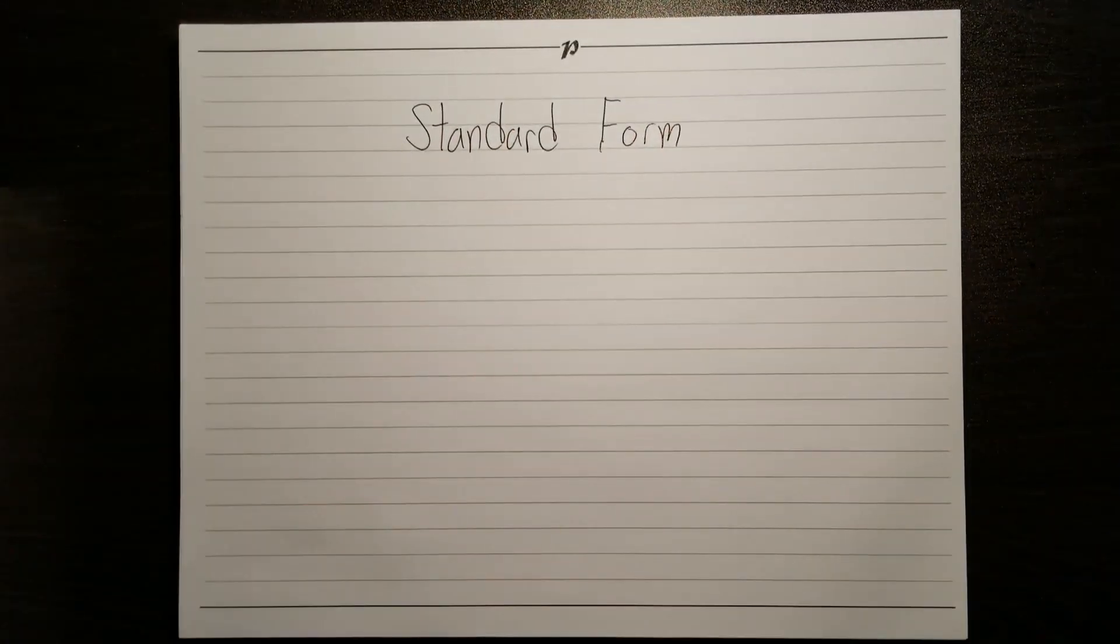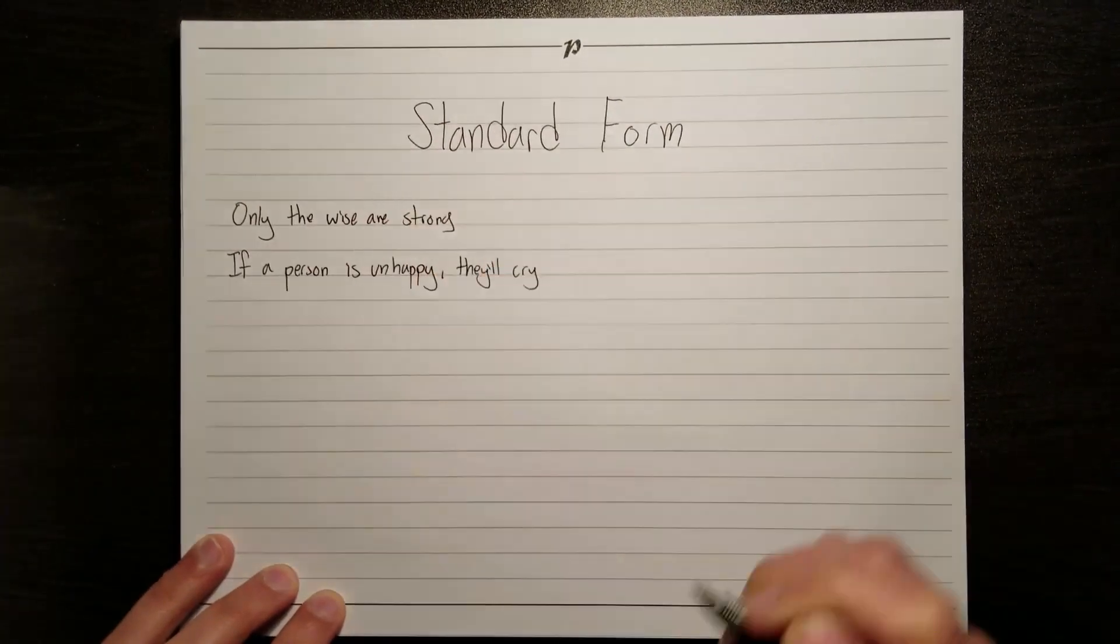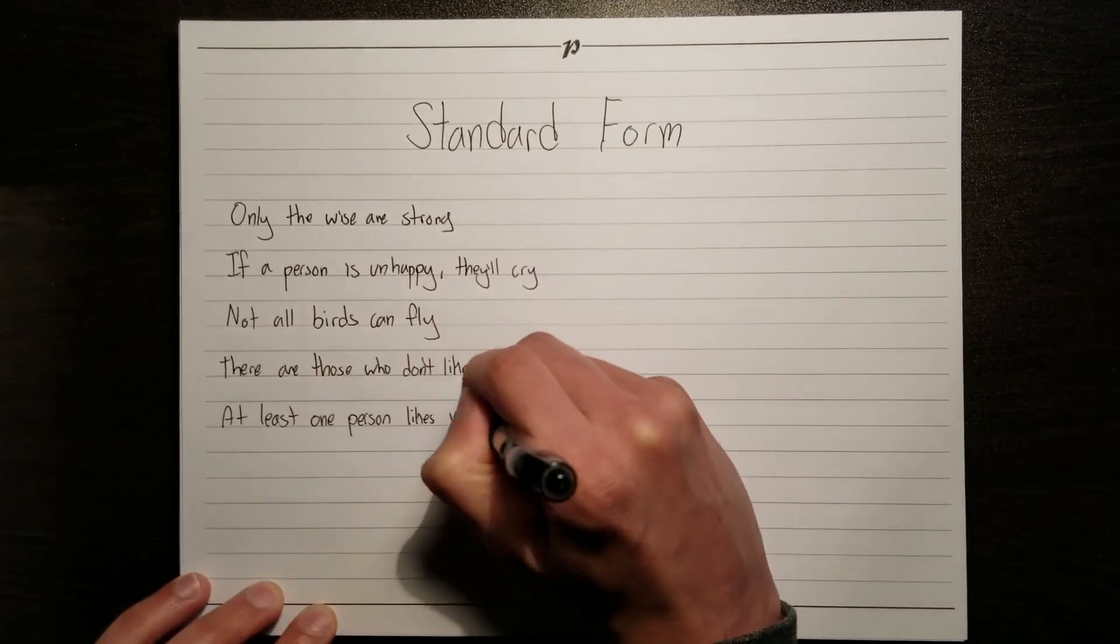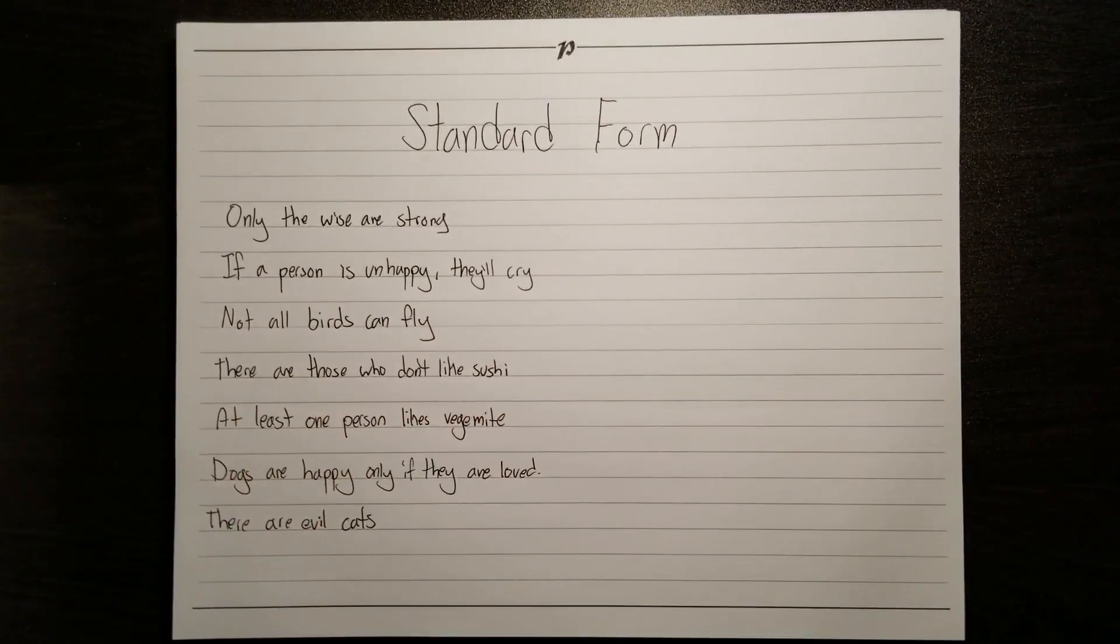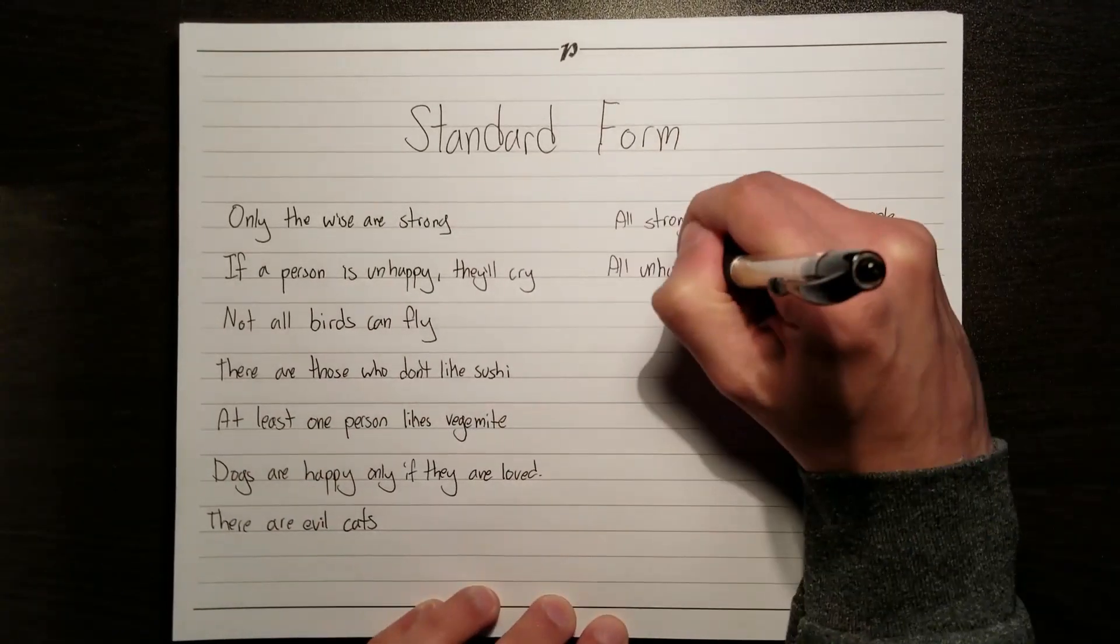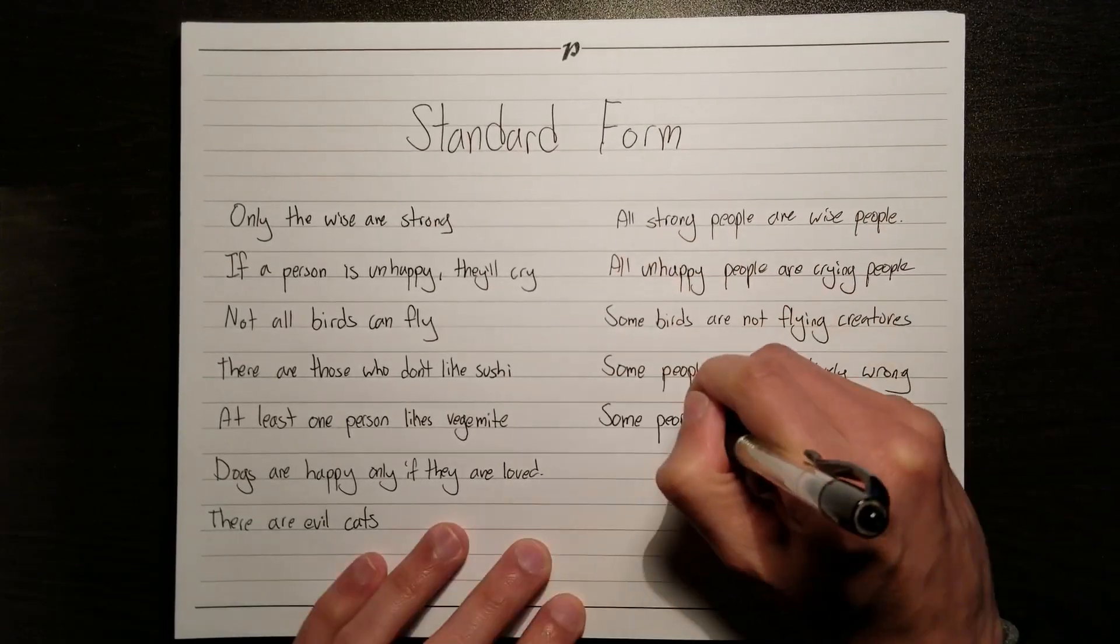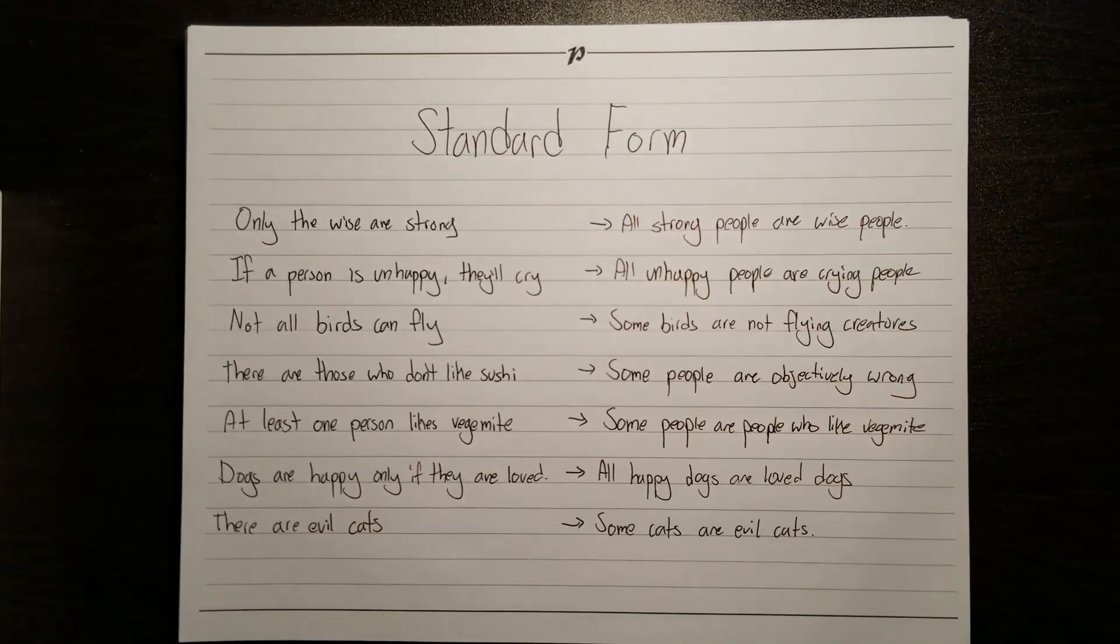The four types of statements as I've shown them are all in what's called standard form. Unfortunately, things are rarely so neat in the real world, and you'll come across all sorts of messy categorical statements. So when doing categorical logic, your first job will normally be to translate these everyday categorical statements into standard form.